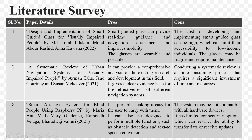Next is 'A Systematic Review of Urban Navigation Systems for Visually Impaired People' by Ayman Taha and Jane Courtney, published in 2021. The pros are that it provides a comprehensive analysis of existing research and development in this field, and gives a clear evidence base for the effectiveness of different navigation systems. The cons are that conducting a systematic review is a time-consuming process that requires a significant investment of time and resources.